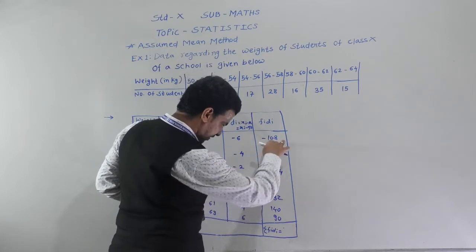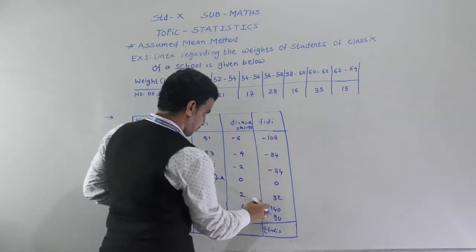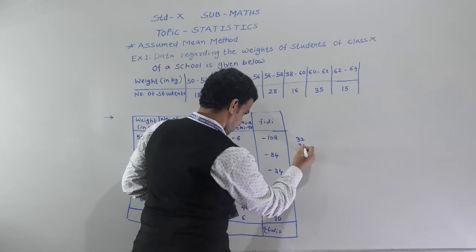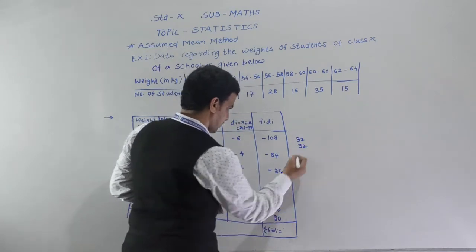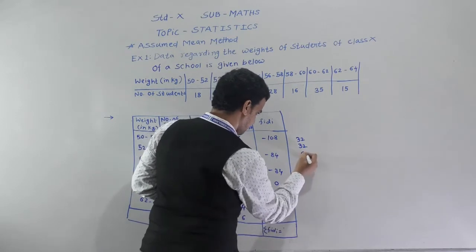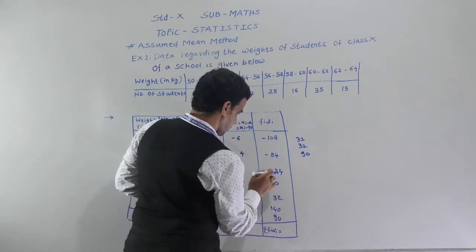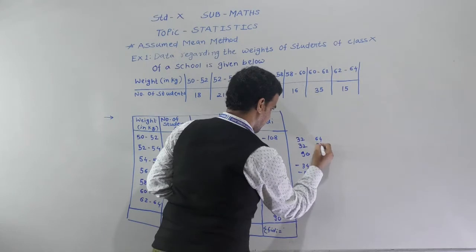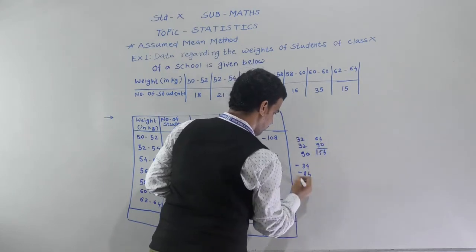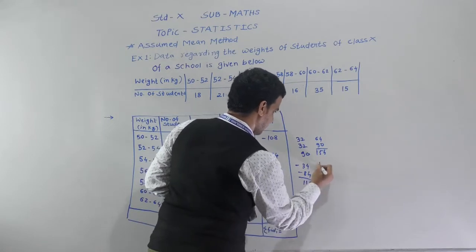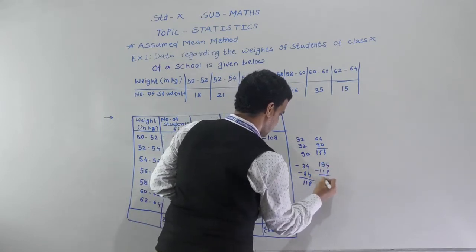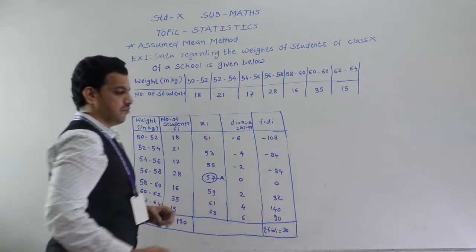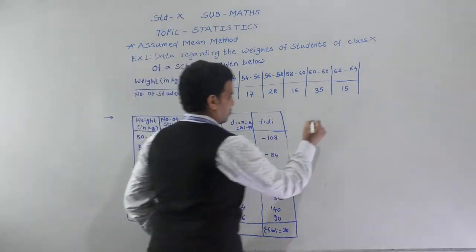Adding the positive fi × di values: 32 + 32 = 64, then 64 + 90 = 154. The negative total is 180. So summation fi × di = 154 − 180 = −26... giving summation fi × di = 36.